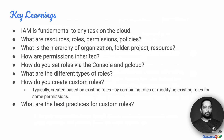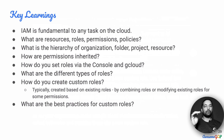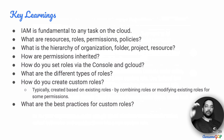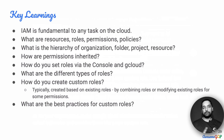Key learnings: IAM is fundamental to any task on the cloud — you need to know it well. Understand what resources, roles, permissions, and policies are. Also understand the hierarchy of organization, folder, project, and resource, and how they inherit permissions from each other. What happens to a permission set at the organization level? You cannot revoke it at the project or resource level. Learn how to set roles via the console and using the command line. Know the different kinds of roles — primitive, predefined, and when those don't suit, a custom role — and how to create custom roles by starting from existing roles and modifying them.